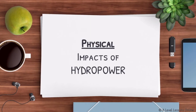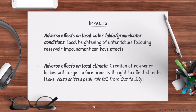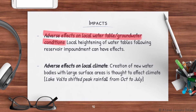Physical impacts include adverse effects on the local water table and groundwater conditions. When a dam is constructed, sedimentation may prevent percolation from functioning properly, causing groundwater levels to drop — link this back to your Theme 1 content. There are also adverse effects on local climate: the creation of a large water body increases evaporation and condensation, resulting in greater convectional rainfall. Lake Volta is a case where a huge spike in the climograph occurred after dam creation.